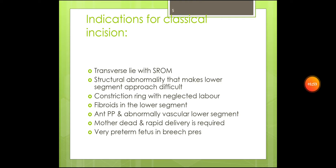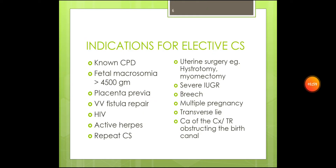Or in the case of a very preterm fetus in breech presentation. What are the indications for elective cesarean section? Elective cesarean section refers to a cesarean section which has been pre-planned. Indications include non-cephalopelvic disproportion, fetal macrosomia whereby the fetus weighs more than 4.5 kg, placenta previa, vesico-vaginal fistula repair, HIV and AIDS, active herpes.